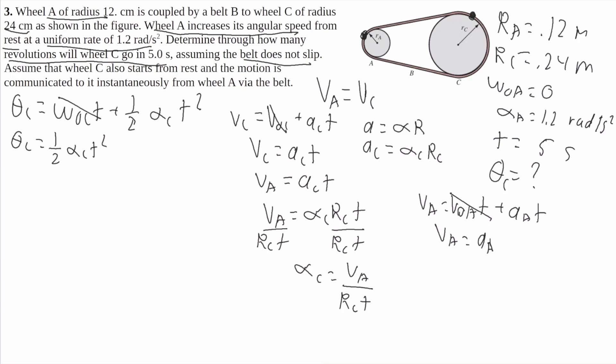And since we said that A equals alpha R, we're going to do the same thing as I did for C, so we'll get V A equals alpha A R A times time. So now I'm going to plug it in there.